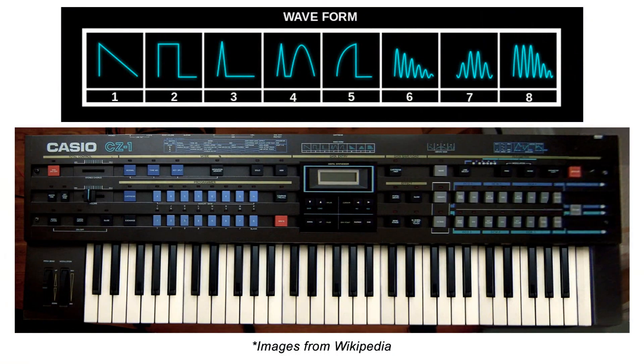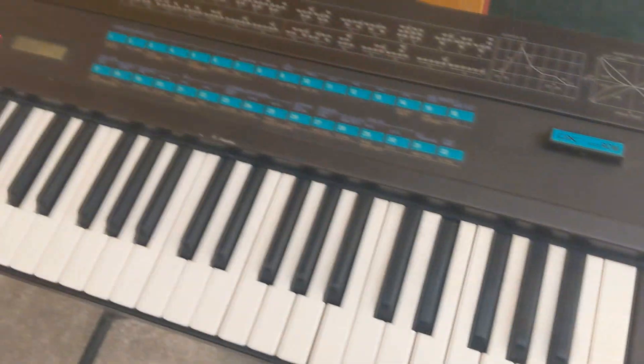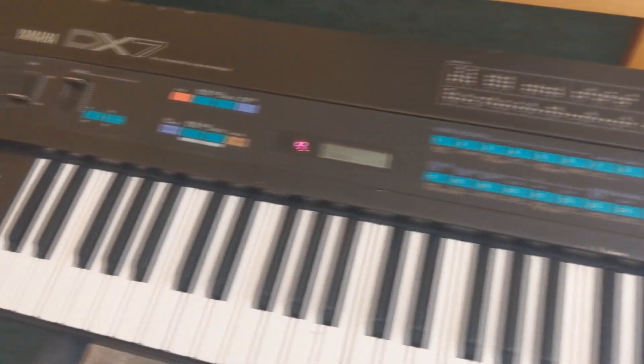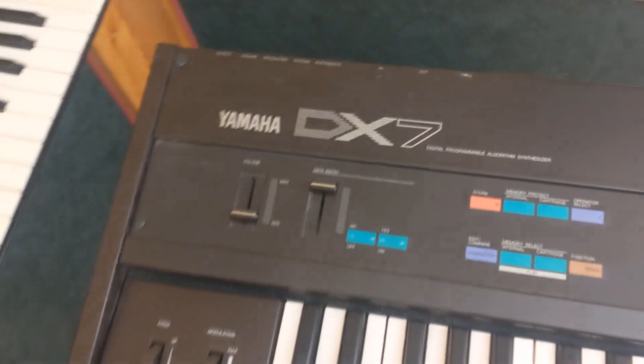In the mid-80s, Casio briefly entered the professional synth market with their CZ line of synthesizers. These were phase distortion based, known for bridging the gap between the earlier analog synthesizers and the much less intuitive but very popular FM synthesizers like the DX7. While the CZs could sound analog, the oscillators were digital. Casio obscured this by calling them DCOs — digitally controlled oscillators — the same terminology Roland was using for their Juno and Jupiter synths, which were analog.